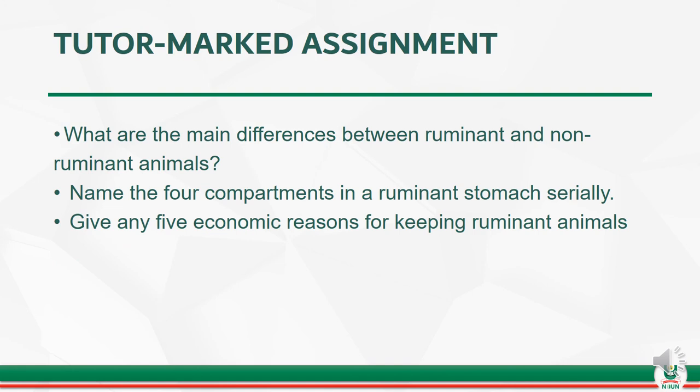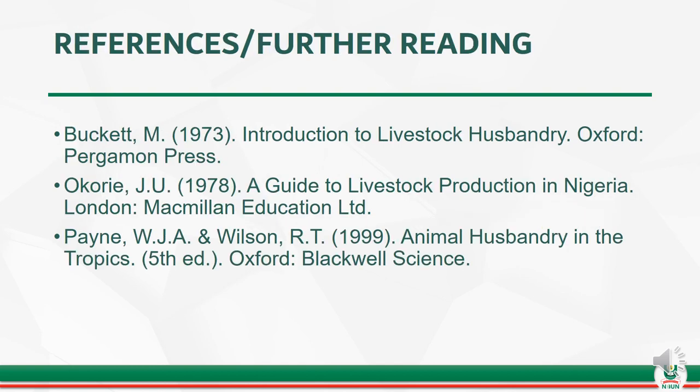For the assignment, endeavor to do the following: 1. What are the main differences between ruminant and non-ruminant animals? 2. Name the four compartments in a ruminant stomach serially. 3. Give any five economic reasons for keeping ruminant animals. For further reading or references, you can refer to Bucket (1973), Payne and Williams (1999).